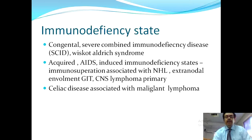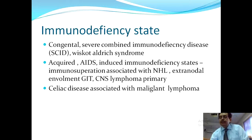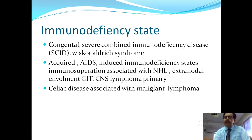Immunodeficiency states — both congenital and acquired — are associated with NHL. Congenital types include severe combined immunodeficiency disease (SCID), where infants present with failure to thrive, chronic diarrhea, and recurrent infections. Wiskott-Aldrich syndrome presents with eczema, thrombocytopenia, immunodeficiency, bloody diarrhea, and recurrent infections.